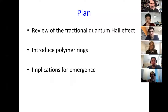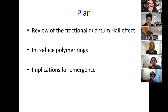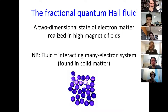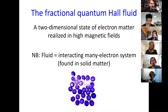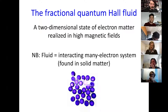The plan is to start with a review of the fractional quantum Hall effect, building up quite slowly through what it actually is. Then by analogy I'll introduce a very classical case based on polymer rings, and then try to tease out what we might think is emergent from those two cases. The fractional quantum Hall fluid is a two-dimensional state of electronic matter realized in high magnetic fields. I'll call it the fractional quantum Hall fluid — though be aware I'll also talk about classical fluids later, so do interrupt if anything gets confusing.